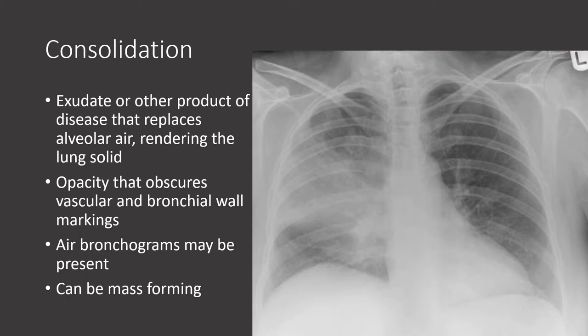Consolidation is the result of a disease process such as exudate rendering portions of the lung solid. When we see consolidation on chest x-ray, this opacity will appear as density — that is, too much white. It typically will obscure bronchovascular markings. And because airways run through this area of opacified lung, we may see air bronchograms — that is, air-filled airways running through the opacity.